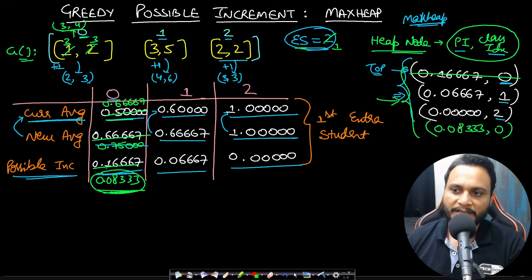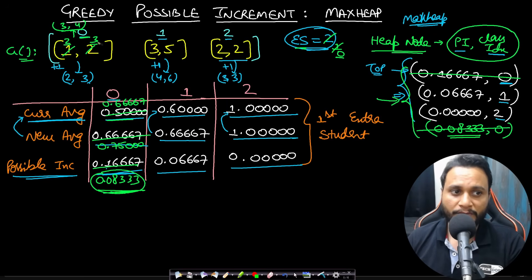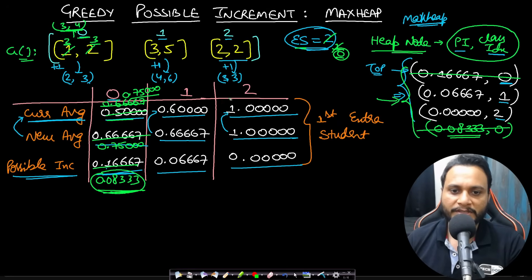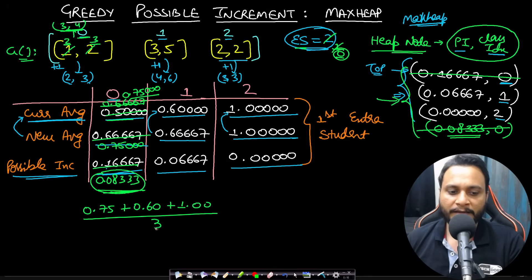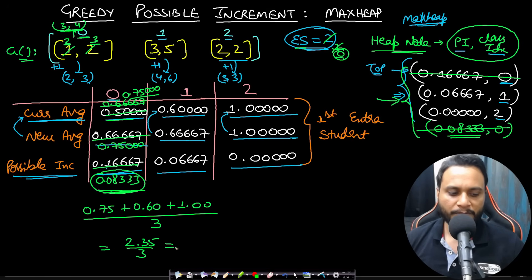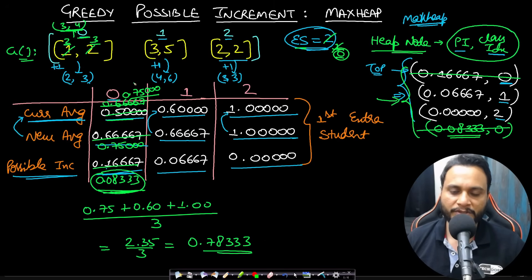The second extra student again goes to class 0 (increment 0.0833 is still highest). Class 0 updates to [3, 4] with current average 0.75. No more extra students remain, so we stop. The final average pass ratio is (0.75 + 0.60 + 1.00) / 3 = 2.35 / 3 = 0.78333.